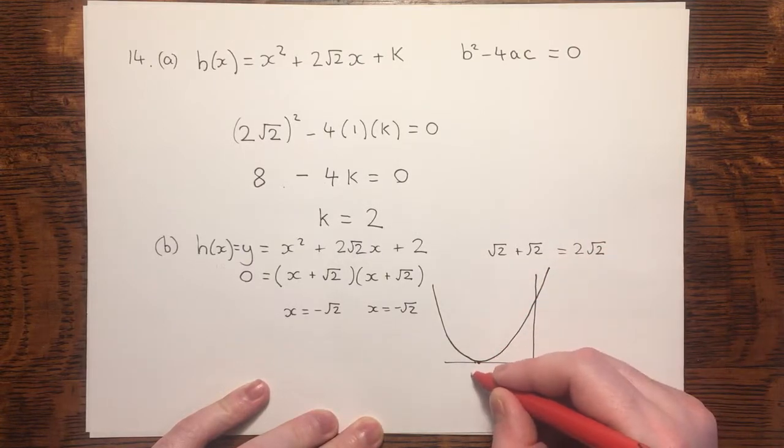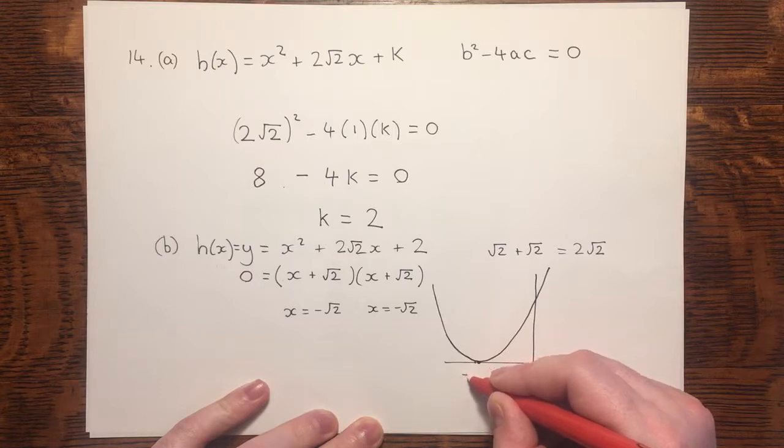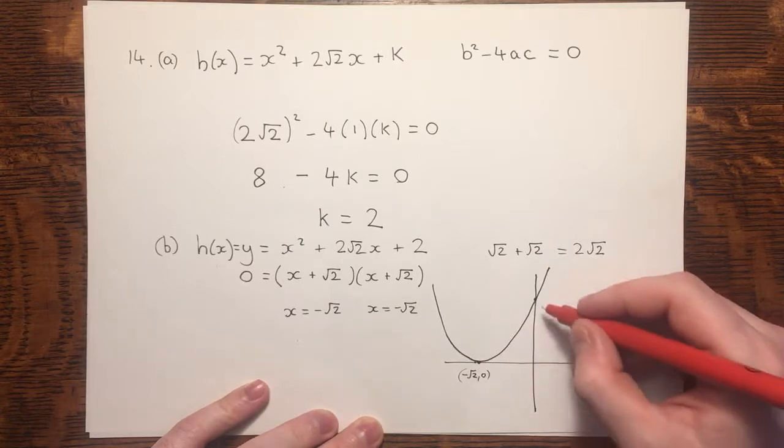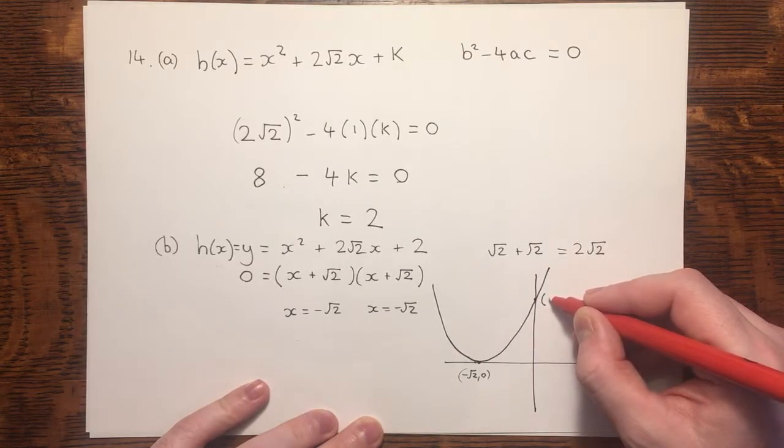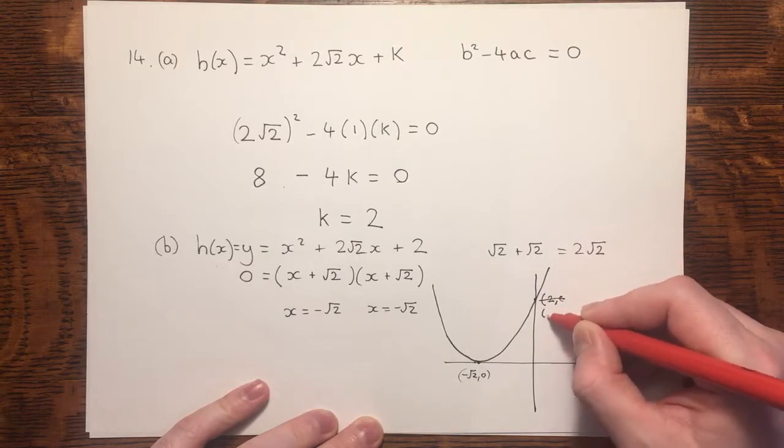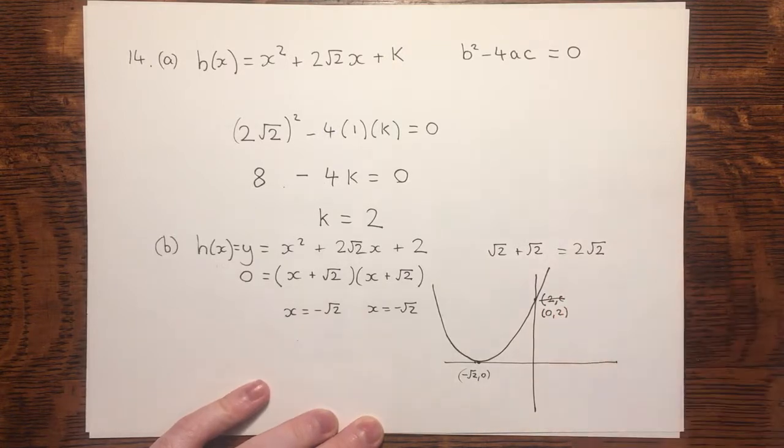The minimum point is at (-√2, 0), and the y-intersection is at (0, 2). Get the coordinates the right way around.